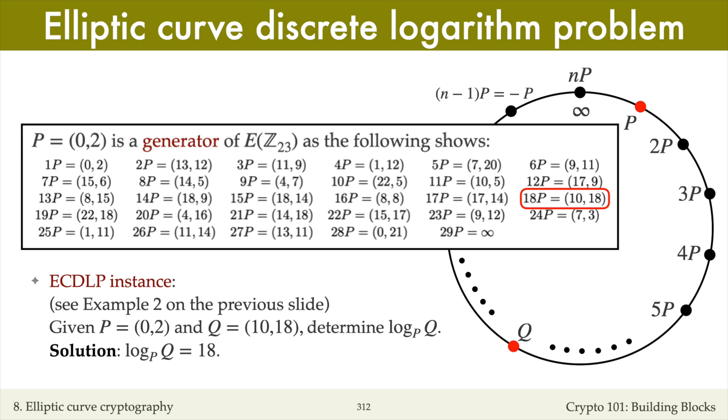This trial and error method is not efficient if n is large, since there will be too many multiples of P to try.